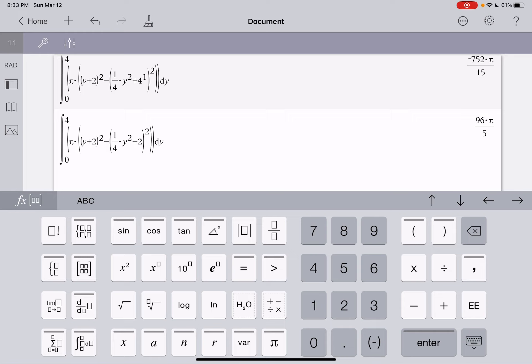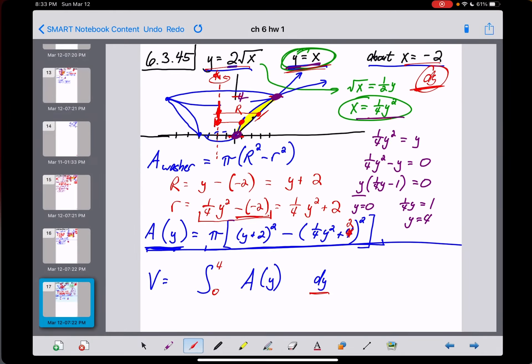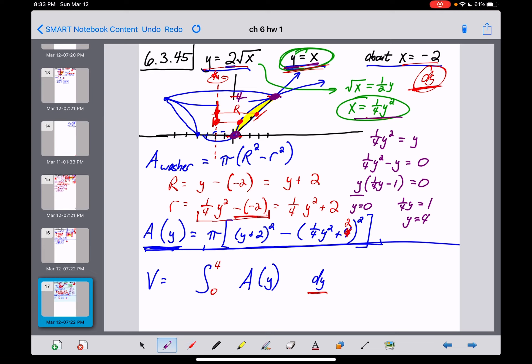So their answer to 46 in the solutions manual of 32 pi over 3, I think is totally nuts. This 96 pi over 5 sounds like about the answer I was looking for here. So I'm going to write that down and say 96 pi over 5 cubic units, and I'm going to call that good and get out of dodge.